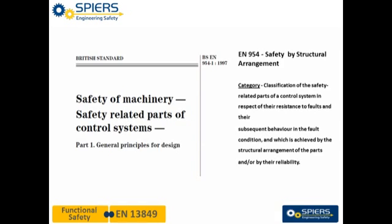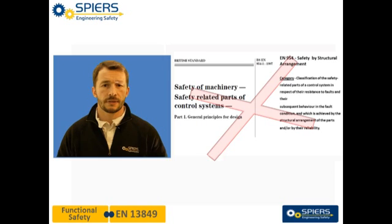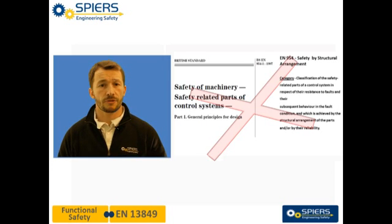EN 954 focused heavily on the structure of the safety related circuit. This has now been superseded by EN 13849, which has reduced this emphasis on structure and introduced the need for the reliability of the safety circuit to be considered. This has increased the burden upon safety component manufacturers to provide suitable failure data and support in the applications in which their components are used.